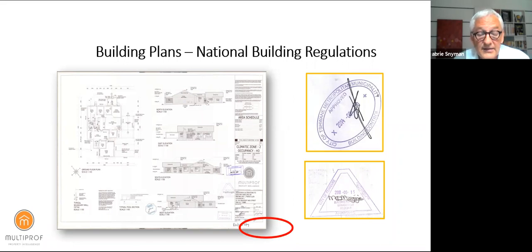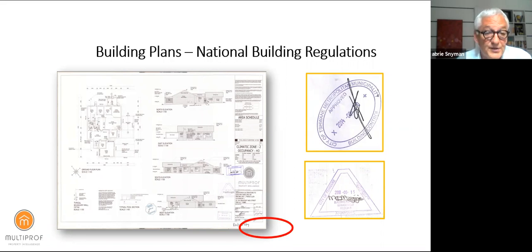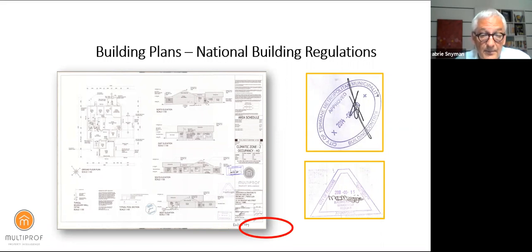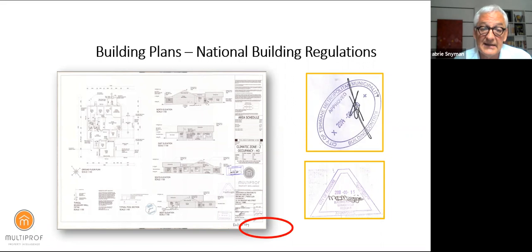A building plan is required by council and it is each owner's responsibility to have a copy. The site development plan is the responsibility of the body corporate. It is not the municipality's responsibility to keep copies — they keep copies for one reason only, and that is to lose them. If you can't find your plans at council, you have no case against them. It is each individual's and the body corporate's responsibility to have copies.